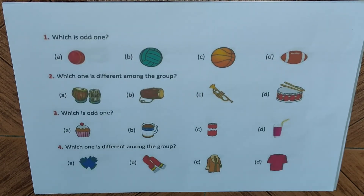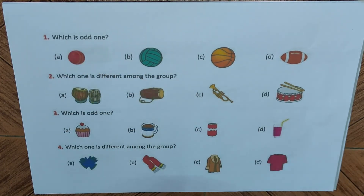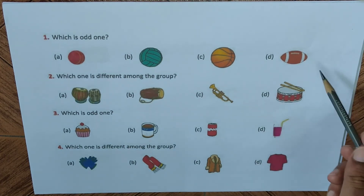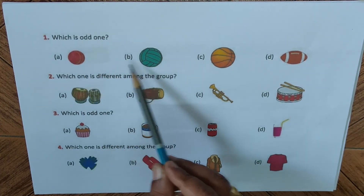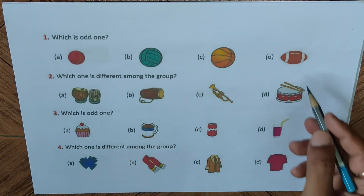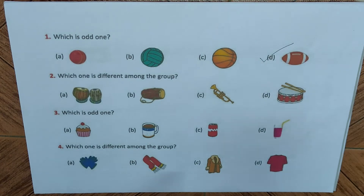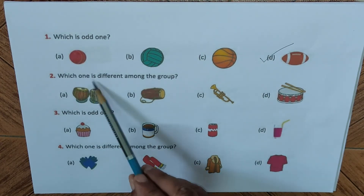We have completed the first set and now have a new set of questions. Question number one: which is the odd one out? We have a cricket ball, a volleyball, a basketball, and a rugby ball. Shape-wise, these are all circular, but the rugby ball is not circular in shape — so the rugby ball is the odd one out.